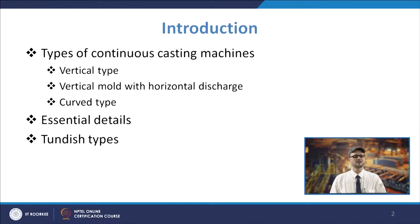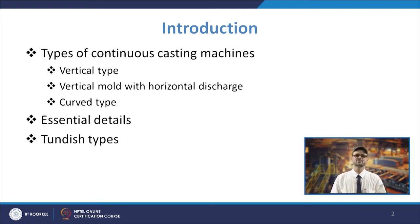The content in this lecture covers the types of Continuous Casting Machines — normally vertical type, vertical mold with horizontal discharge, and curved type. We will also talk about the essential details: what components are present in the Continuous Casting setup and their roles, and we will further discuss the different types of tundish.